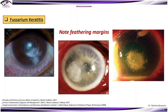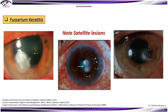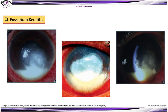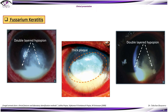These are a few clinical samples — note the feathery margins of the ulcer here, and satellite lesions visible here, which are intra-stromal infiltrates around the main ulcer. Here you can also see a double-layered hypopyon and thick plaque.